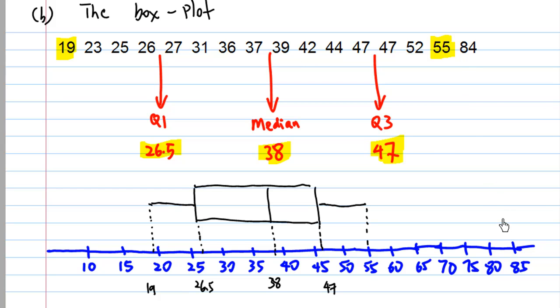And 84 is outside the upper fence, so you draw a cross there to indicate this is an outlier. And the rest of the points are within the fence.